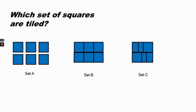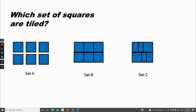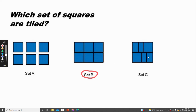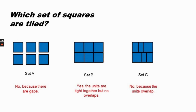Remember there should be no gaps and no overlaps. So which of these sets of squares are tiled? Let's look at set A — it has gaps, so it is not tiled. Set B seems to show all squares with no gaps or overlaps. Set C has squares that are overlapped, so it's not set C. It's set B because the units are tight together but have no overlaps.